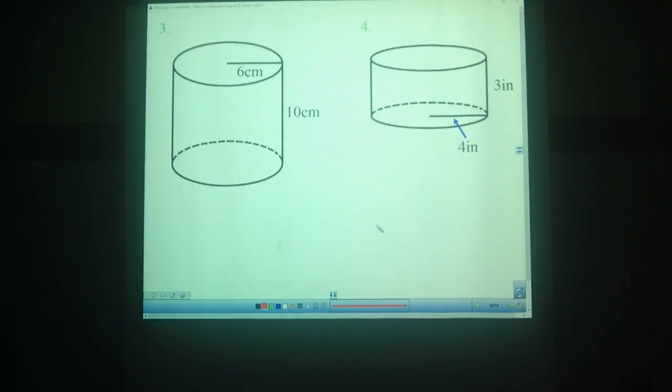Try finding the volumes of these two here. Problem number three, we start from our volume formula. Volume equals pi r squared times height. We put in our numbers - volume is equal to pi times 6 squared times 10, and then that's pi times 36 times 10. 36 times 10 is 360 pi cubic centimeters. And then if we use 3.14 for pi, that gives us 1,130.4 cubic centimeters. And if we use the pi key on the calculator, 1,130.97. Only off by half a cubic centimeter.